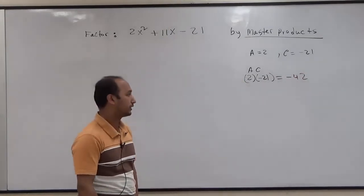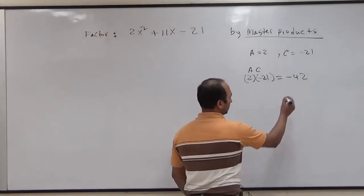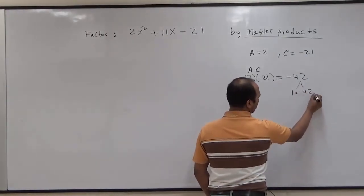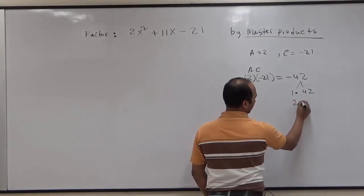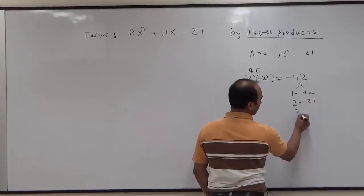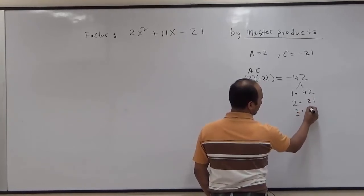Then we factor 42, and factors are 1 times 42, 2 times 21, 3 times 14,